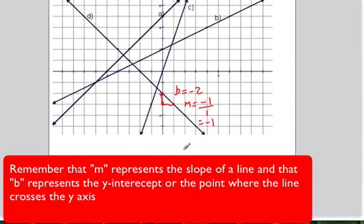So m equals negative 1 in this case, and b is negative 2. So our equation is y equals negative x minus 2. And remember again that lines that go down to the right have negative slope.